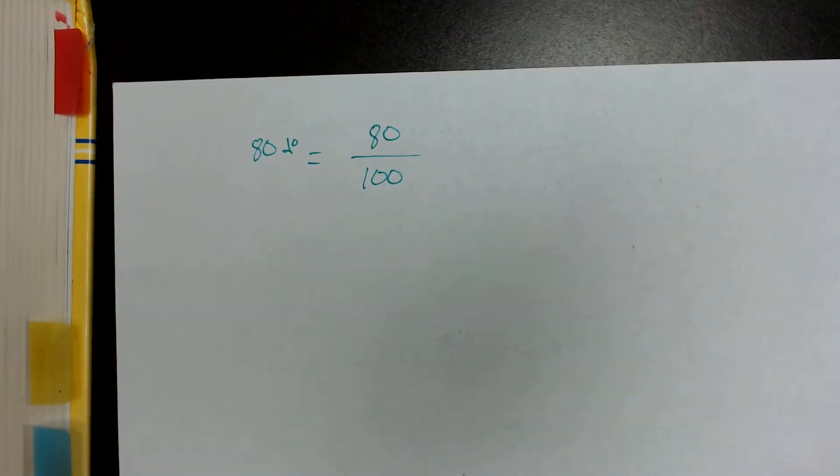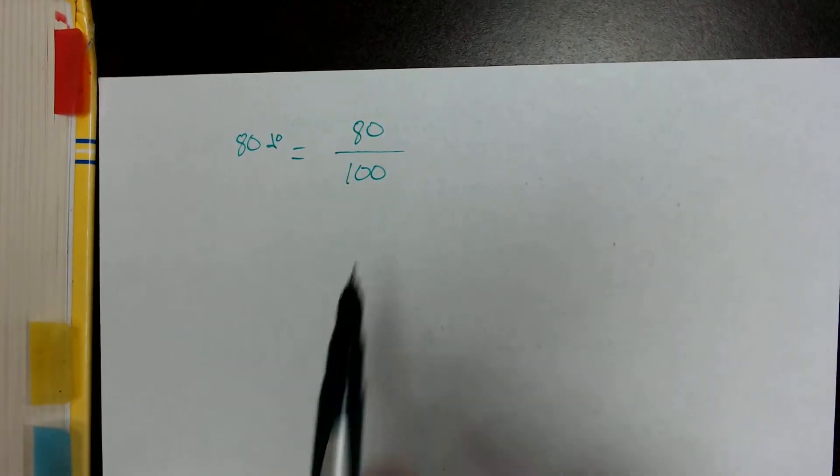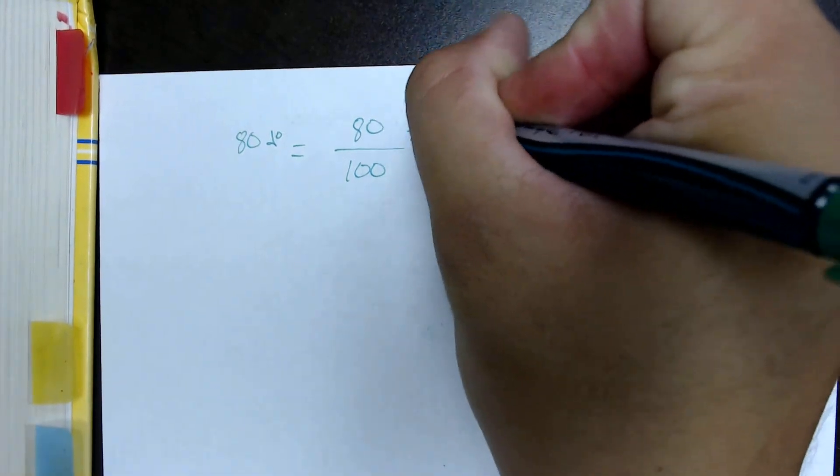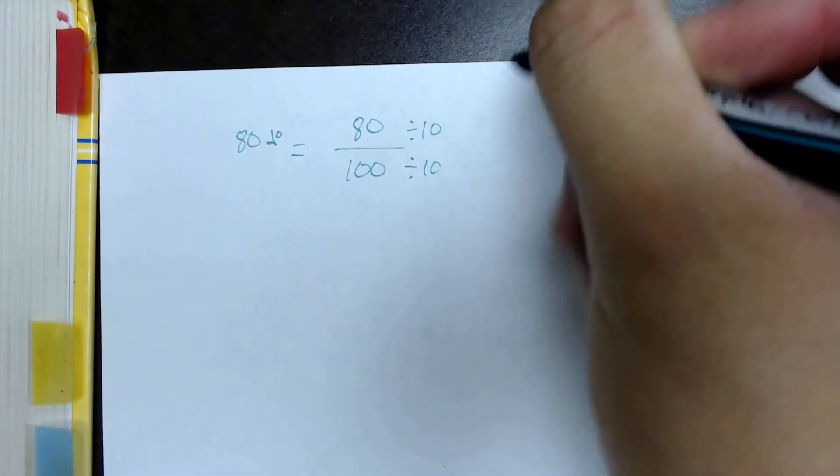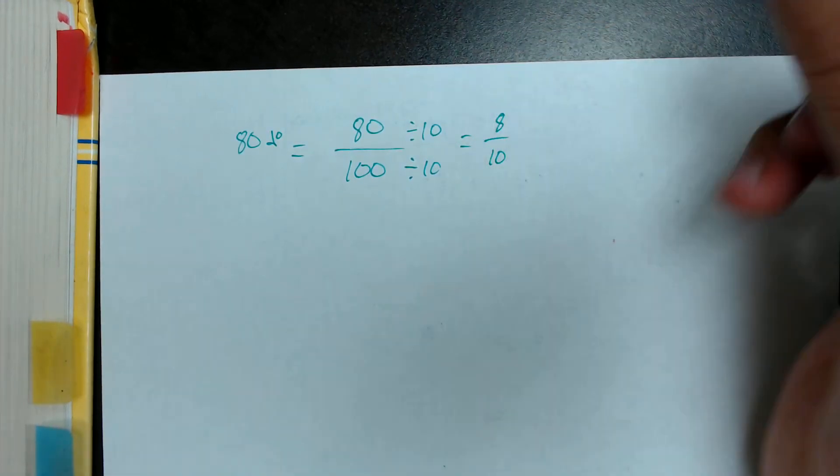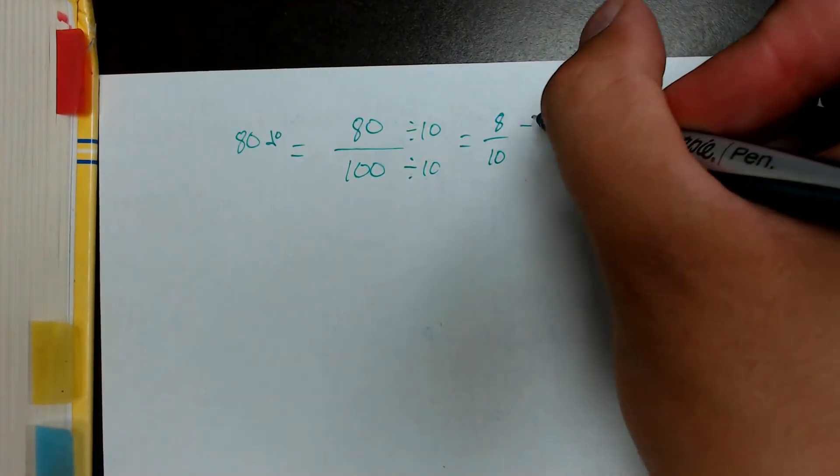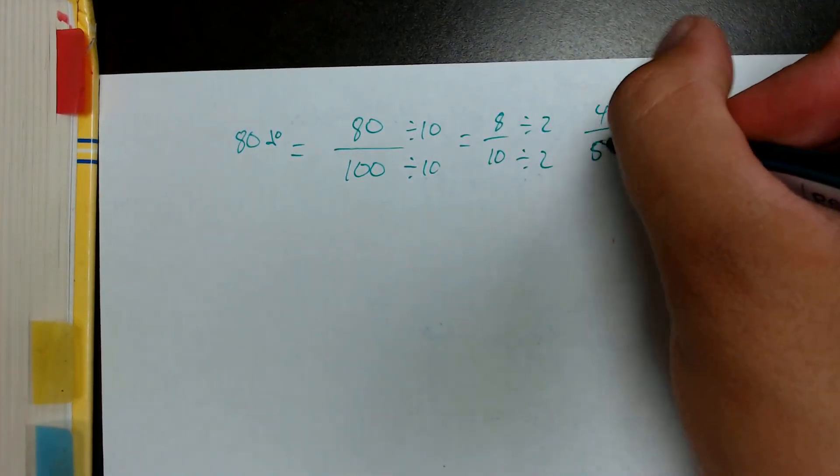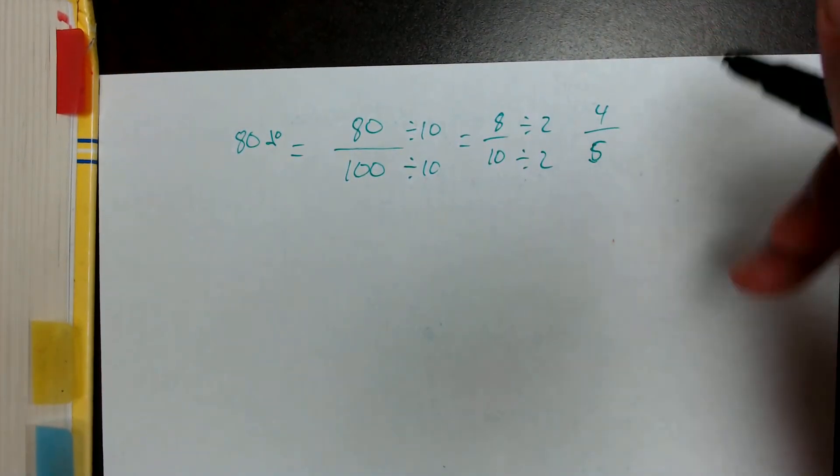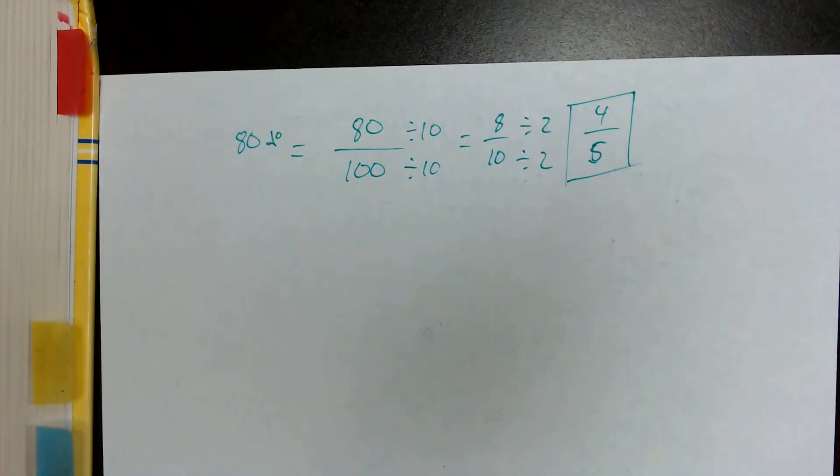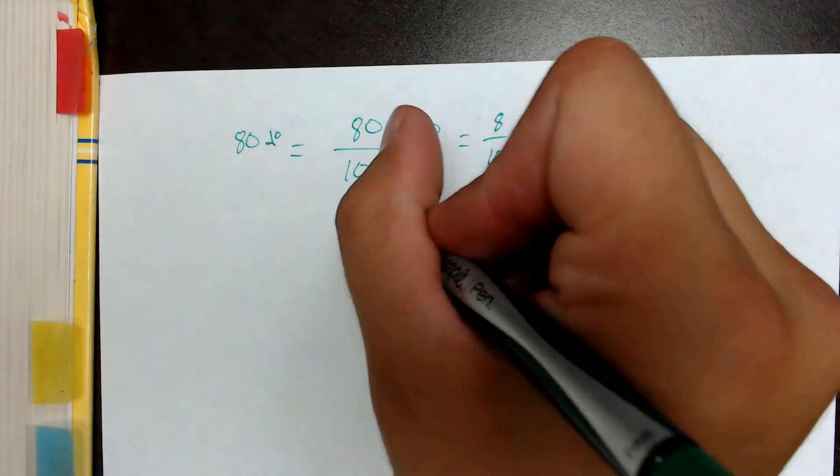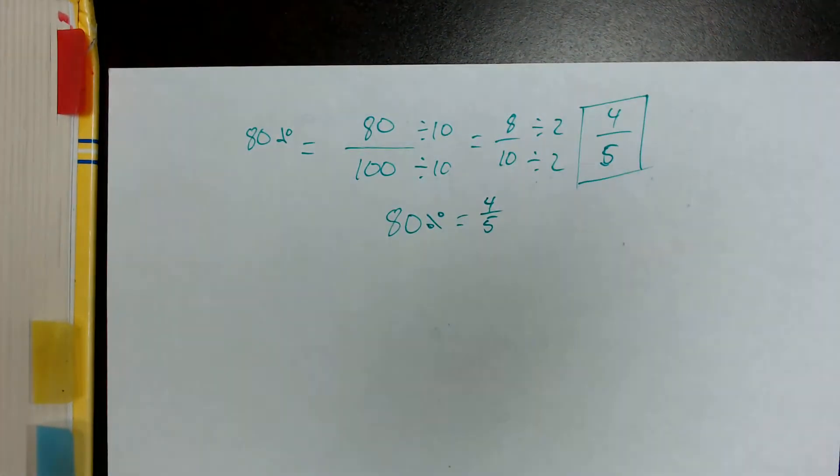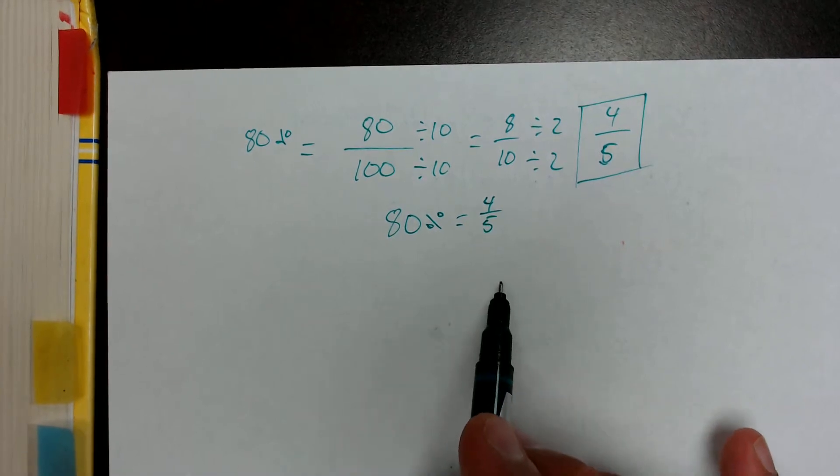From there, all I have to do is reduce. So I can see both of these numbers are divisible by 10. I remember that from my divisibility rules. So I can divide 80 by 10, I can divide 100 by 10, and then I get 8 over 10. And I see both of these are divisible by 2. So 8 divided by 2 is 4, 10 divided by 2 is 5, and that can no longer be reduced. So my fraction is going to be 4 fifths. 80% is the exact same number as 4 fifths. We're just taking the same value and writing it in fraction form.